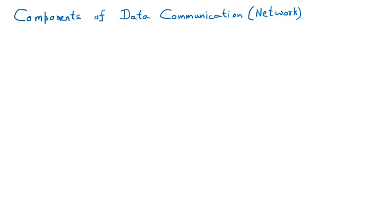We are discussing the components of data communication — the network. To understand all the components, let's take one example. If I have to send data, first of all we need one computer. This computer is the one which is going to send the data, so we can say that it is the sender.